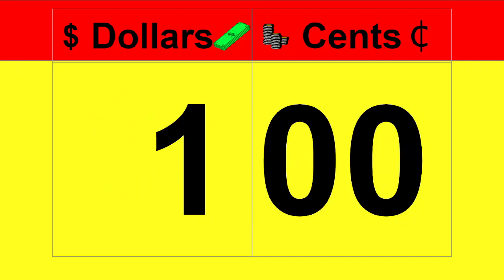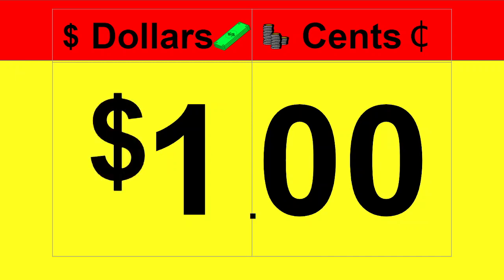We would put a decimal between the 4 and the 25 to show that this costs $4.25. What if our item was exactly 100 cents? We're going to put the decimal between the dollars and the cents. 100 cents is one dollar, and any time that you have 100 cents or more, you can use the dollar symbol.